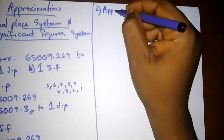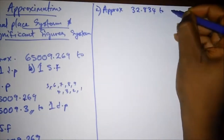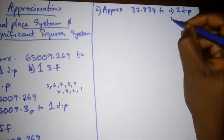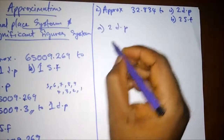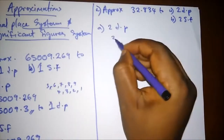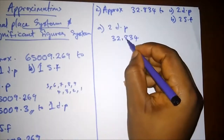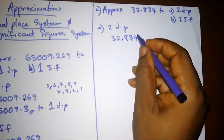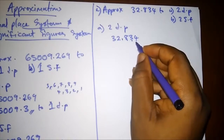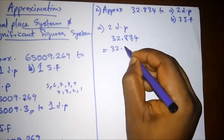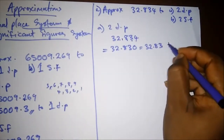Example two: approximate 32.834 — part (a) to two decimal places, and part (b) to two significant figures. For part (a), we count from the decimal point: one, two — that gives us the digits 8 and 3. The next number after those two decimal places is 4. Since 4 is less than 5, we round down and write a zero. Our answer is 32.830, which is also written as 32.83, to two decimal places.